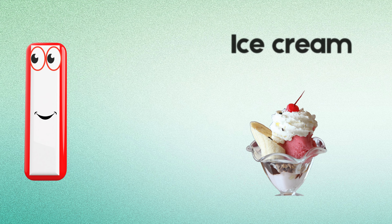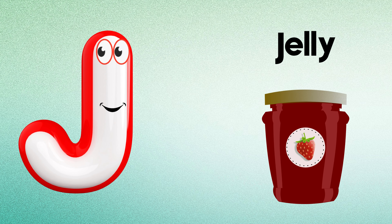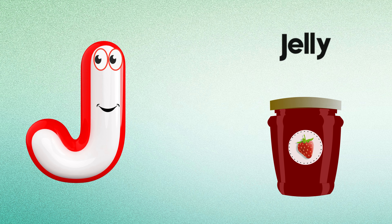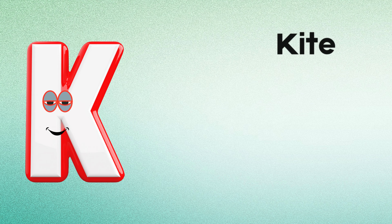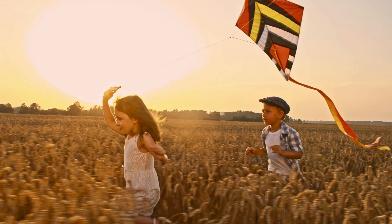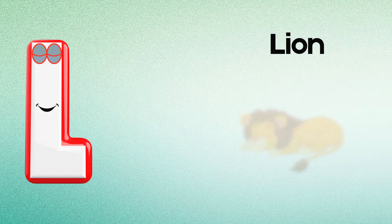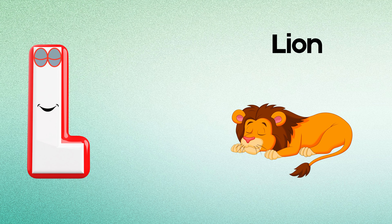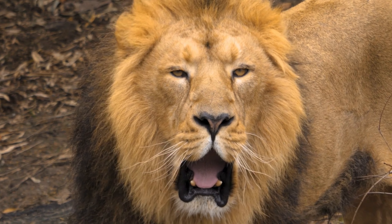I is for Ice Cream. I-I-Ice Cream, I-Ice Cream. J is for Jelly. J-J-Jelly, J-Jelly. K is for Kite. K-K-Kite, K-Kite. L is for Lion. L-L-Lion, L-Lion.